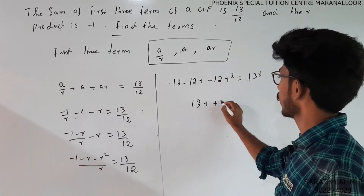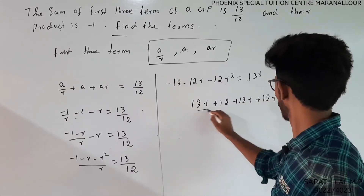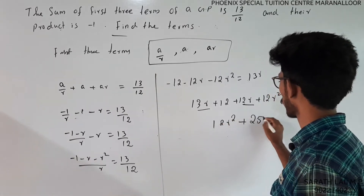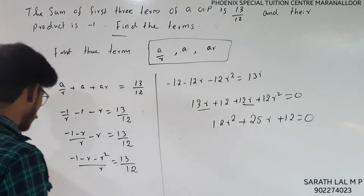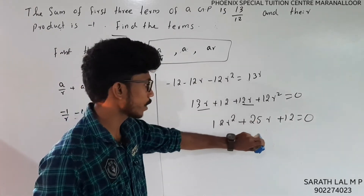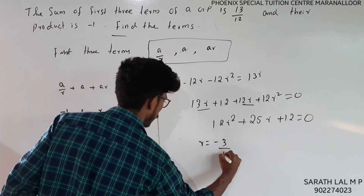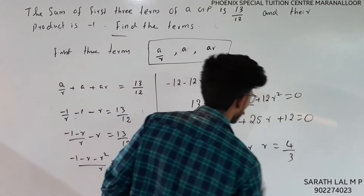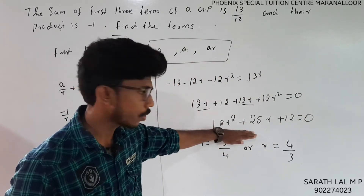Rearranging: 12r² plus 25r plus 12 equals 0. We solve this quadratic using the formula minus b plus or minus root of b² minus 4ac. The solutions are r equals minus 3 by 4 or r equals 4 by 3.